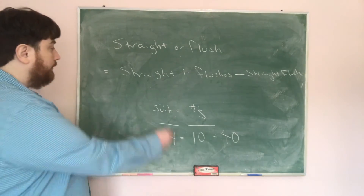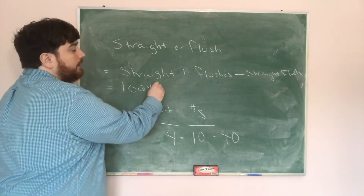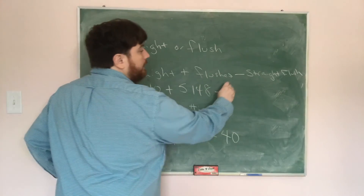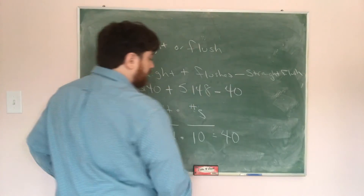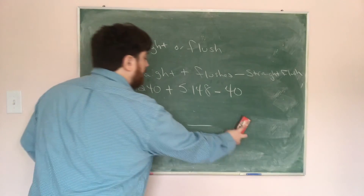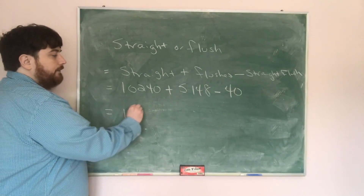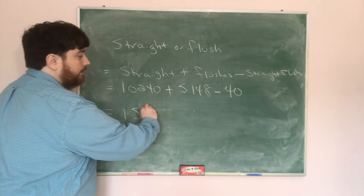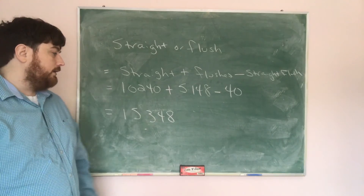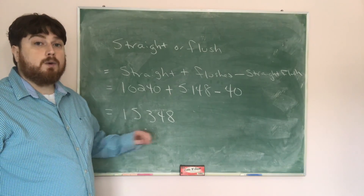Putting it all together: 10,240 straights plus 5,148 flushes minus 40 straight flushes gives us 15,348 unique hands that are either a straight or a flush.